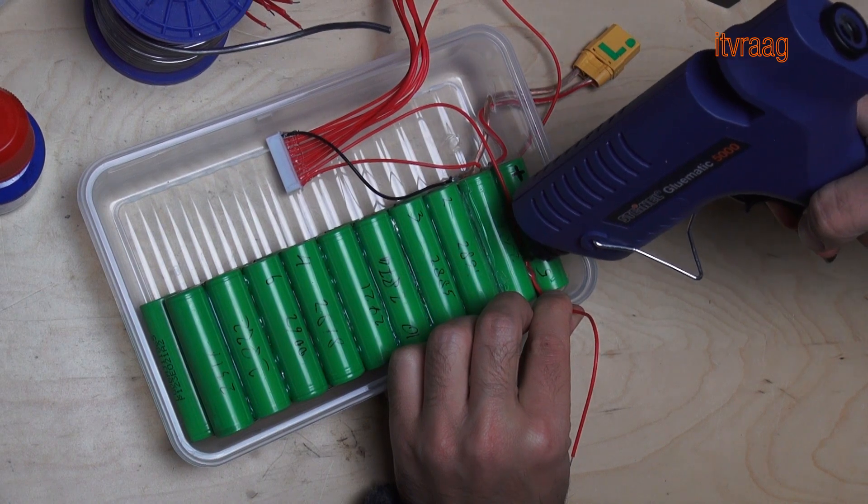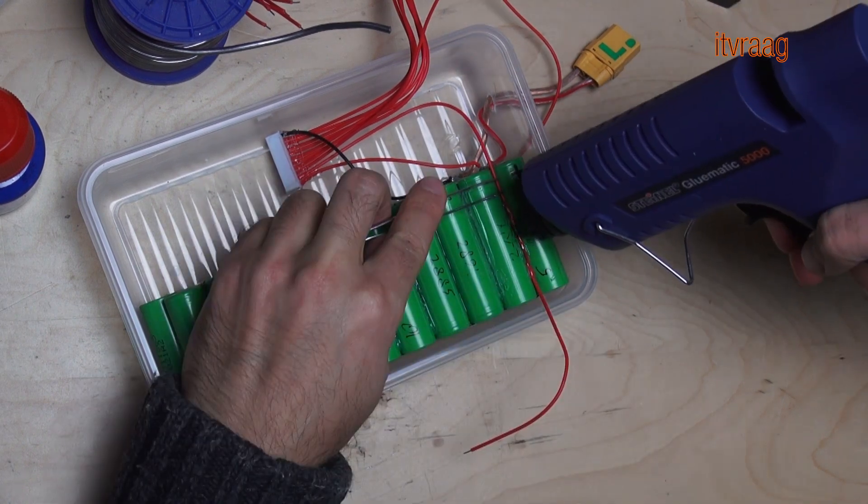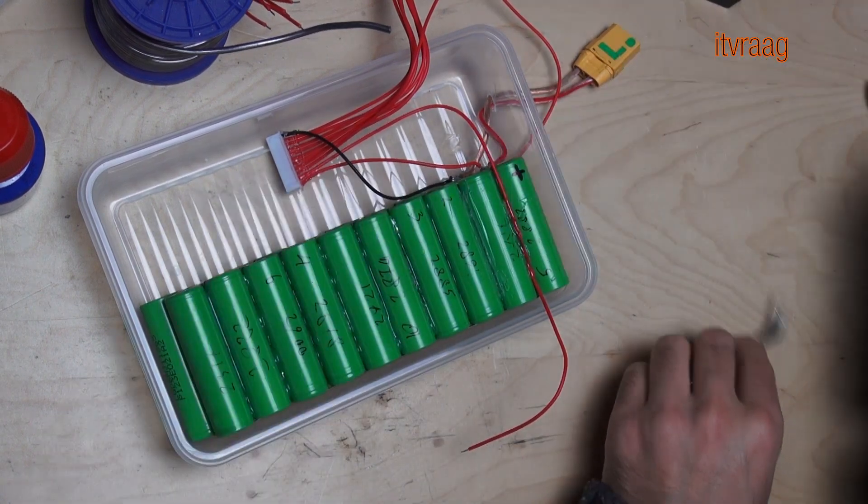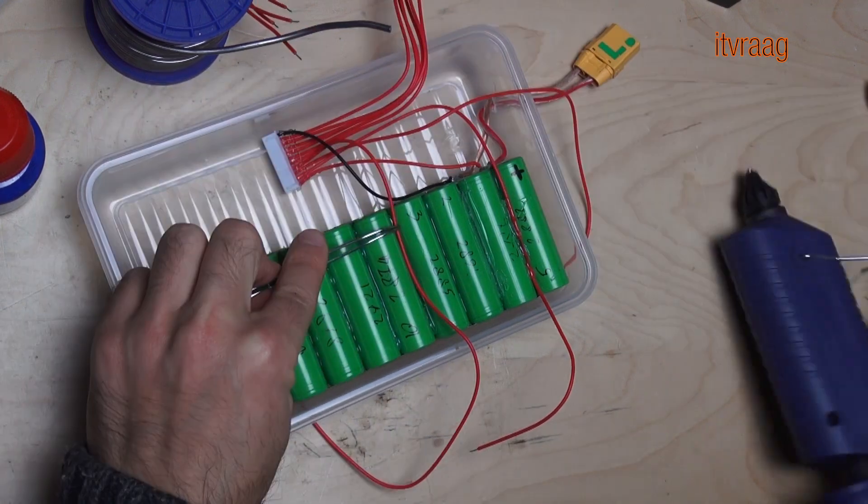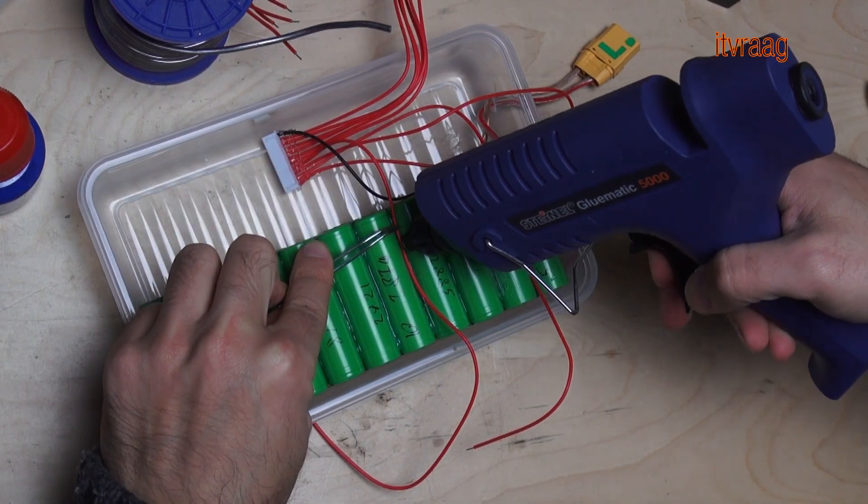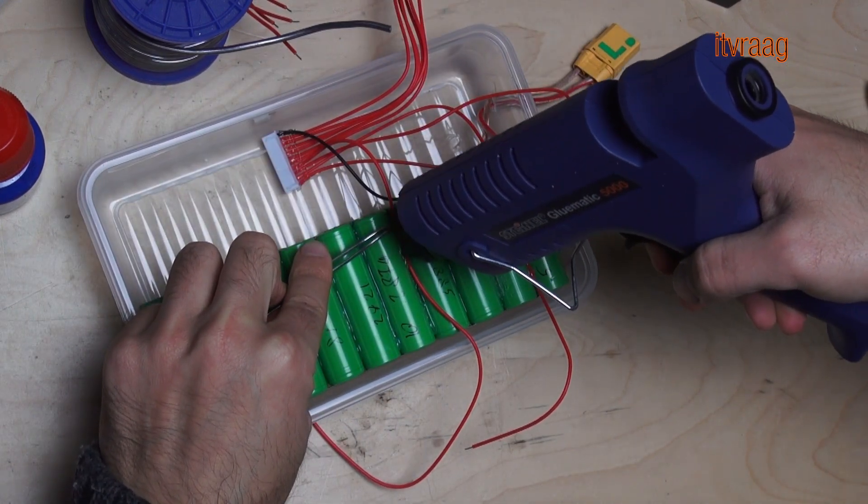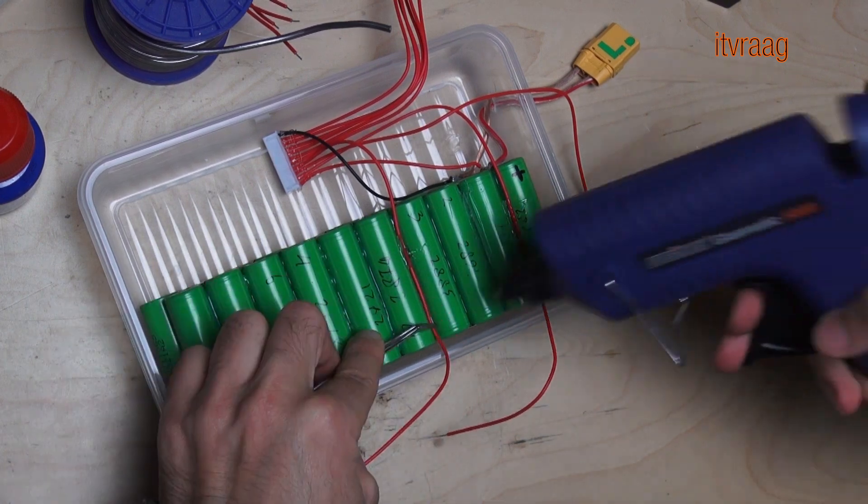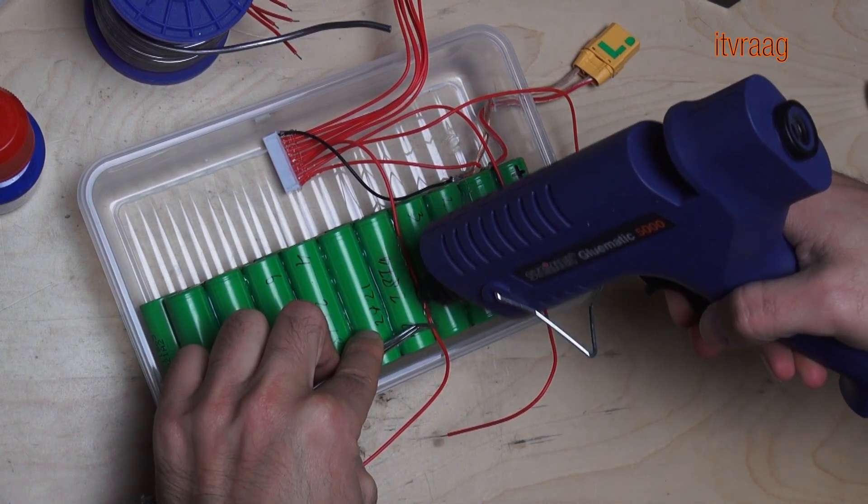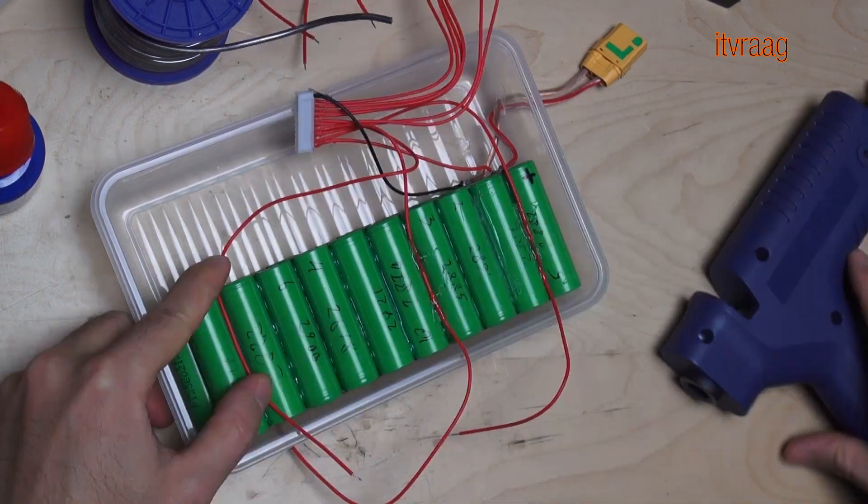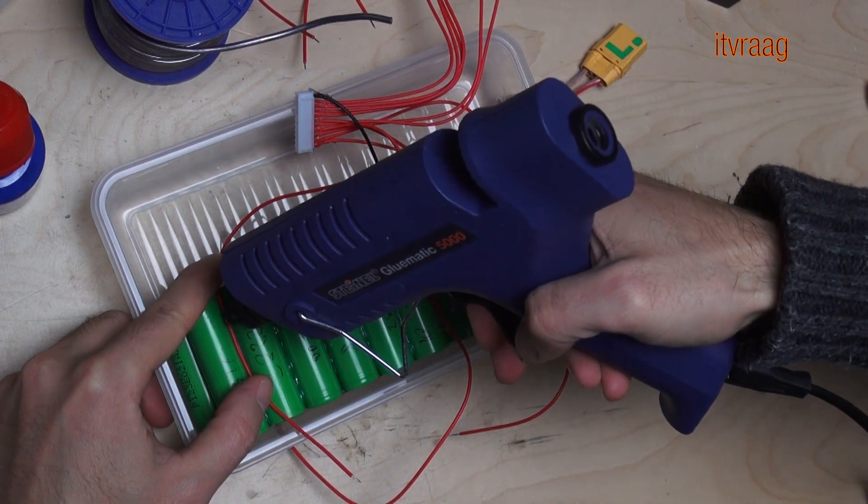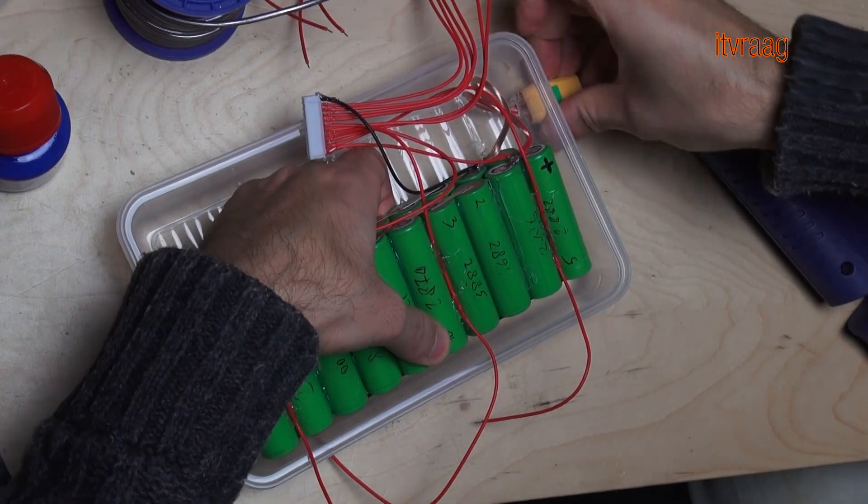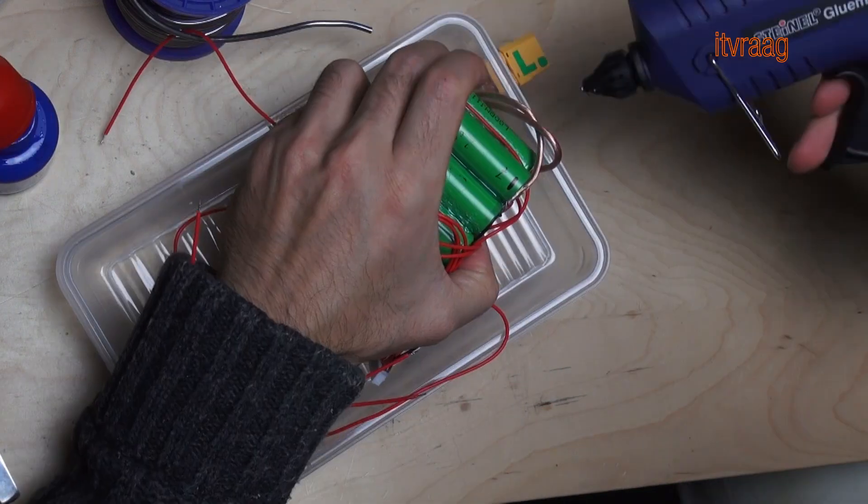Next I glued the lead cables in position and then soldered them in place. It's best to cover the batteries and cables, for example with tape, so that they don't cause short circuit. Otherwise you could easily damage the cells, which has happened to me.